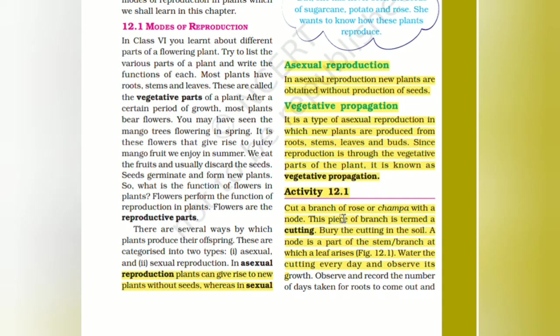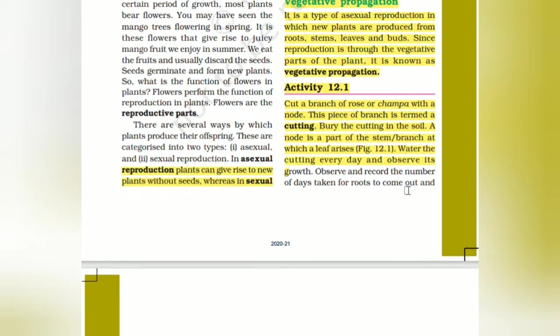Vegetative propagation is a type of asexual reproduction in which new plants are produced from roots, stems, leaves and buds. Since reproduction occurs through vegetative parts, it is known as vegetative propagation. Cut a branch of rose or champa with a node — this piece of branch is termed a cutting — and bury the cutting in the soil.